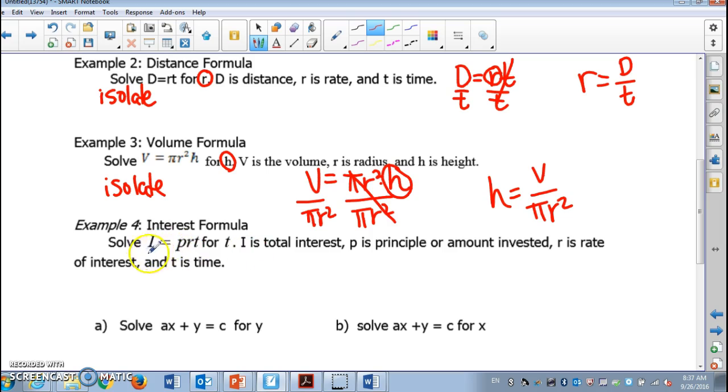Next example. We all know this formula, interest formula. I equals P times R times T. But this time we're gonna solve this equation for T. Solve for T. If you're solving for T, what does that mean? We are isolating T.